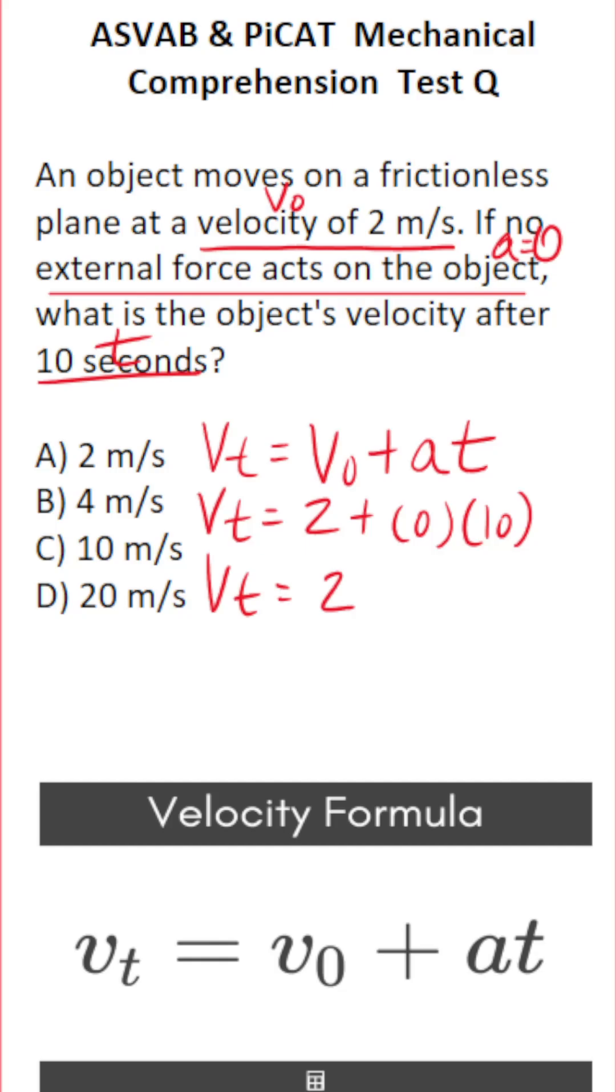Zero times 10. Anything times zero is zero. So our final velocity is going to be two meters a second. So this one is A.